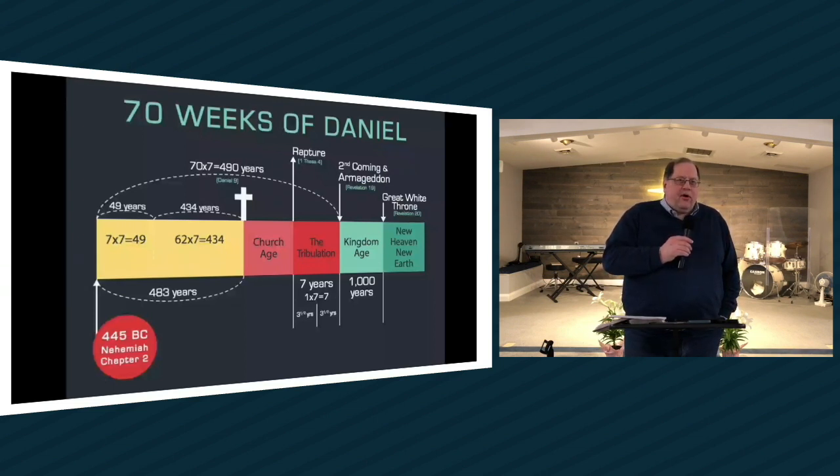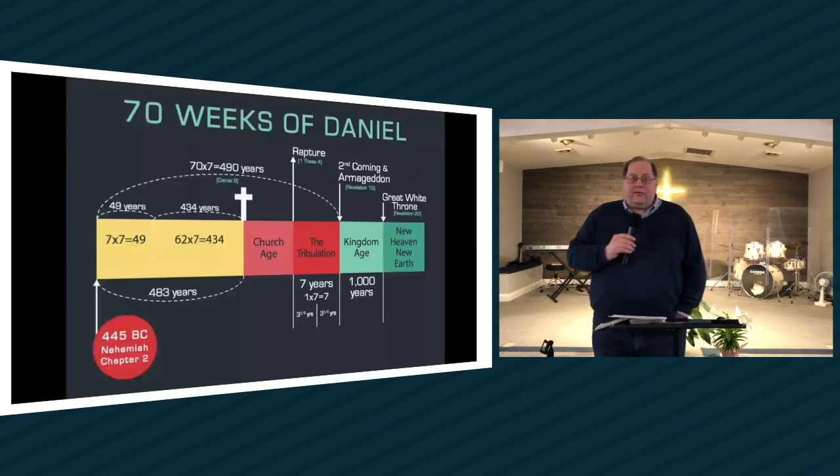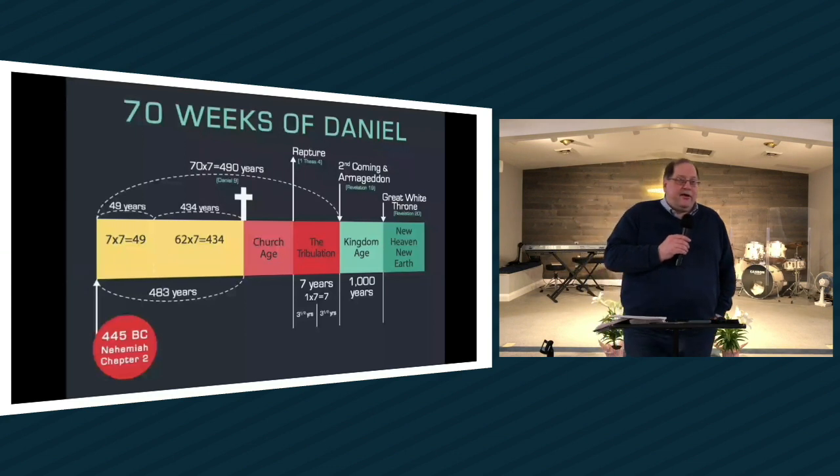So all these views have reference to the rapture. So if premillennialism is the view that the rapture is going to take place before the millennium, postmillennialism is the view that the rapture is going to take place when? Very good. After the millennium.